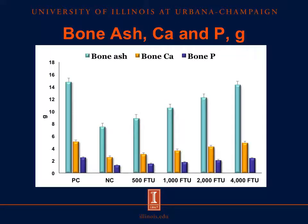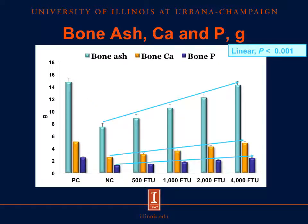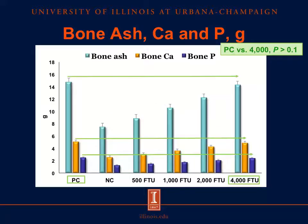Now I will show the results of total amount of bone ash, bone calcium, and bone phosphorus. Bone ash is represented in the light blue bars, bone calcium in the orange bars, and bone phosphorus in the dark blue bars. Pigs fed the negative control diet had lower total amount of bone ash, bone calcium, and bone phosphorus compared with pigs fed the positive control diet. Bone ash, bone calcium, and bone phosphorus linearly increased as the concentration of phytase added to the negative control diet increased, so there were no differences between the positive control diet and the negative control diet plus 4,000 FTU of grain enzyme.